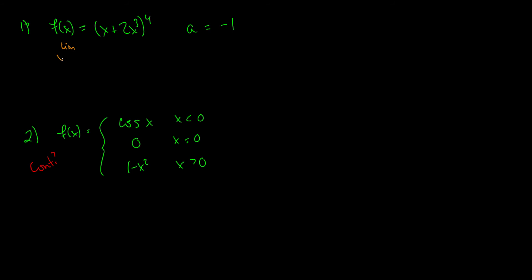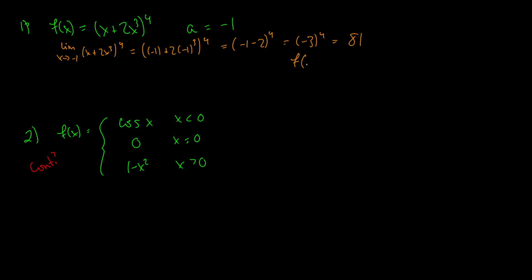For number one, we plug in x equals negative one into x plus 2x cubed, all to the fourth. That gives negative one plus 2 times negative one cubed, all to the fourth. Negative one cubed is negative one, so negative one plus 2 times negative one is negative one minus 2, which is negative 3 to the fourth, equal to positive 81. Because the function is continuous, the limit as x goes to negative one of f of x equals f of negative one, which is 81.